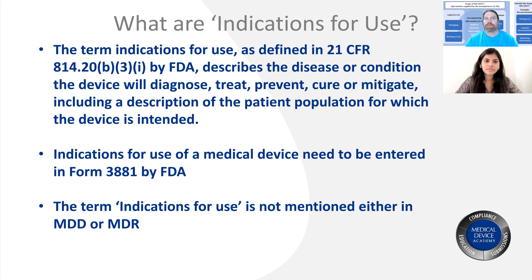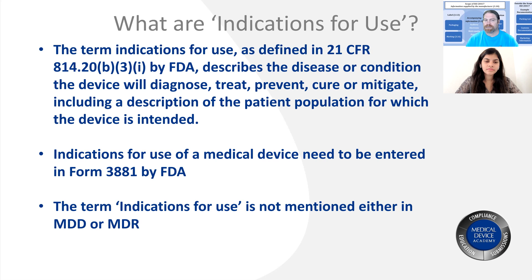If you read the regulations, they define what indications for use is. When you submit a 510k and it gets cleared, the FDA publishes a form letter saying you've been cleared. They also publish form 3881, which defines your indication for use. If you also have a 510k summary, it will have a direct copy of that indication for use statement. It never shows the intended use.